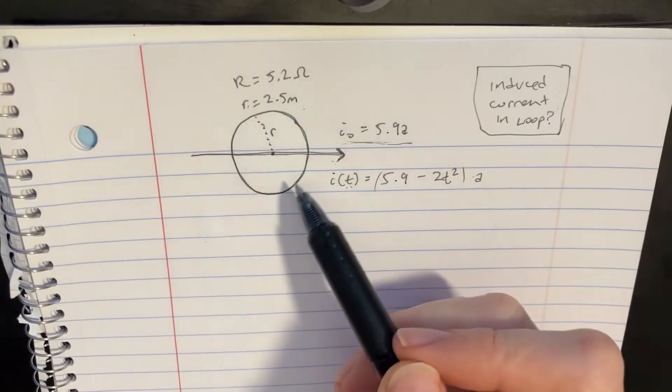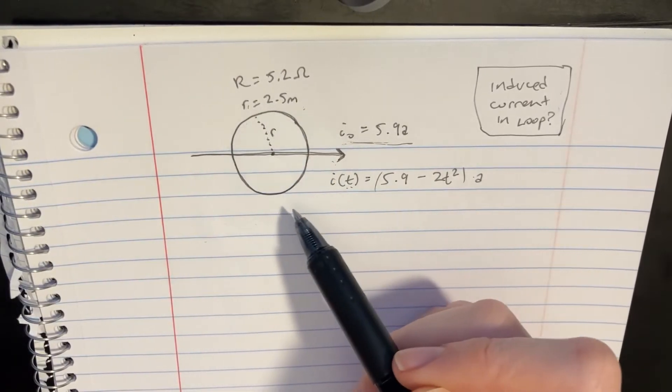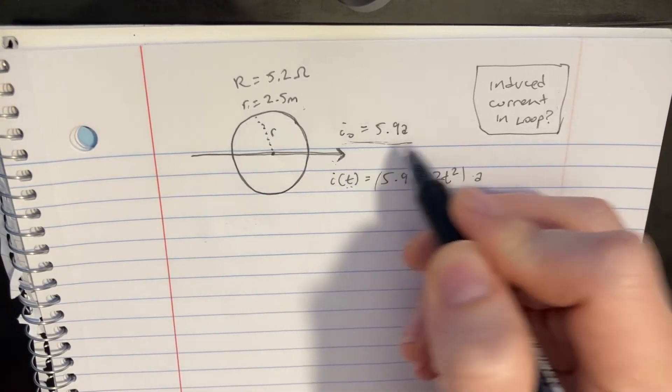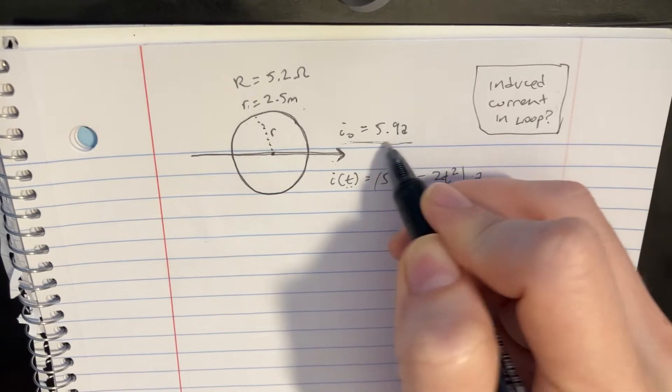Here we're looking at two wires, one that's straight and one that's in a loop here. Now this one has a current going through it. And so the current at the beginning is going to be this thing right here.